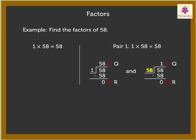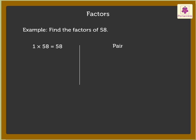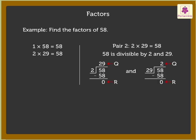When we divide 58 by 58, we get the quotient as 1. In both cases the remainder is 0. Thus it means that 58 is divisible by 1 and 58.